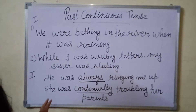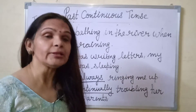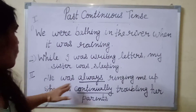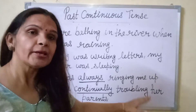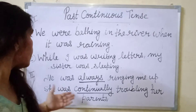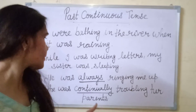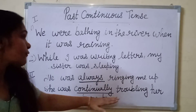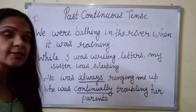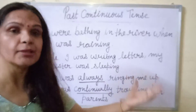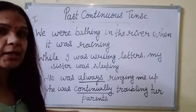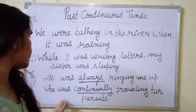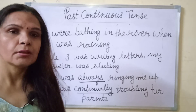The other use is when an action is persistent in the past. We use words like 'always' and 'continually' in such sentences. For example: He was always ringing me up. She was continually troubling her parents. This means the action was happening repeatedly in the past, so we make sentences with these words.